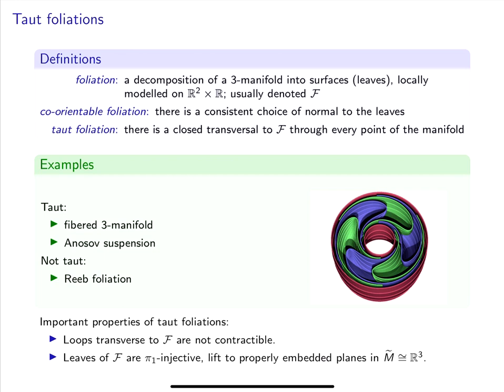Let's move on to review the definitions of taut foliations. A foliation is a decomposition of a 3-manifold into surfaces, called leaves, and this decomposition is locally modeled on ℝ² × ℝ. I'll also draw some foliations in dimension 2, and I'll always mean a codimension 1 foliation. The foliations today are all co-oriented, meaning that it makes sense to say that arcs in the 3-manifold are positively or negatively transverse to the foliation. A foliation is called taut if through every point in the 3-manifold there is a closed loop transverse to the foliation.